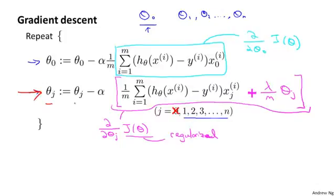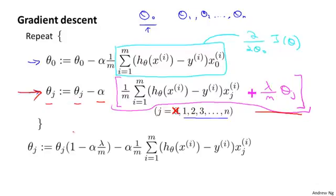Concretely, theta j gets updated as theta j minus alpha times this other term that depends on theta j. If you group all the terms together that depend on theta j, you can show that this update can be written equivalently as follows. Theta j here is theta j times one, and this term is lambda over m with also an alpha here. So you end up with alpha lambda over m multiplied into theta j. And this term here, one minus alpha times lambda over m, is a pretty interesting term with a pretty interesting effect.